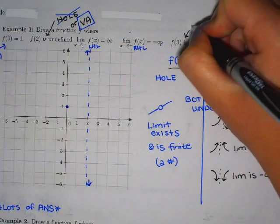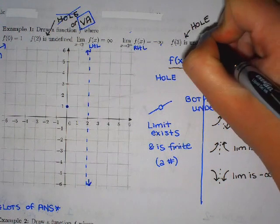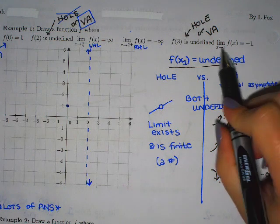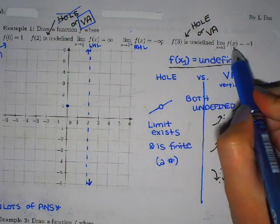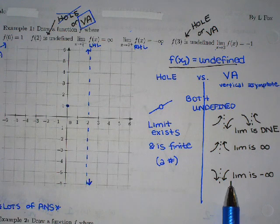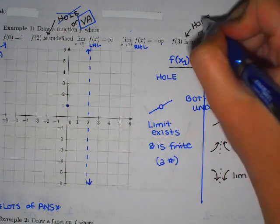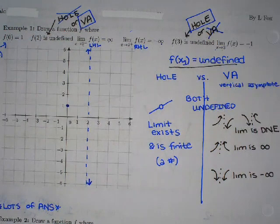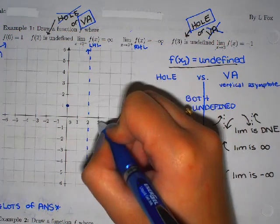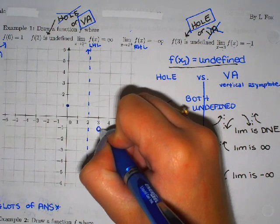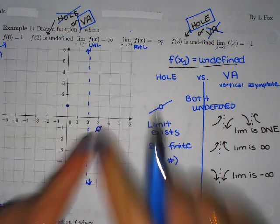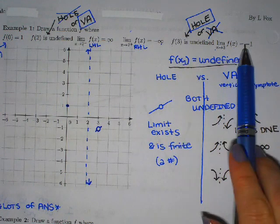Next, f(3) is undefined — so again I have a choice: draw a hole or a vertical asymptote. We'll tell which one we want based upon the limit. The limit as x goes to 3 is negative 1. So should I draw a hole because the limit is negative 1, or a vertical asymptote? It's going to be a hole, because we have a finite number as our limit. It can't be a vertical asymptote because then the limit would be infinity, negative infinity, or DNE. So at x = 3, I'm going to approach negative 1 — I'll put an open circle there and draw a little line to each side.